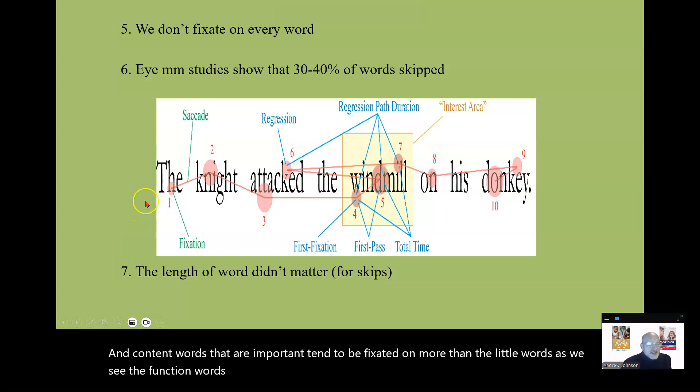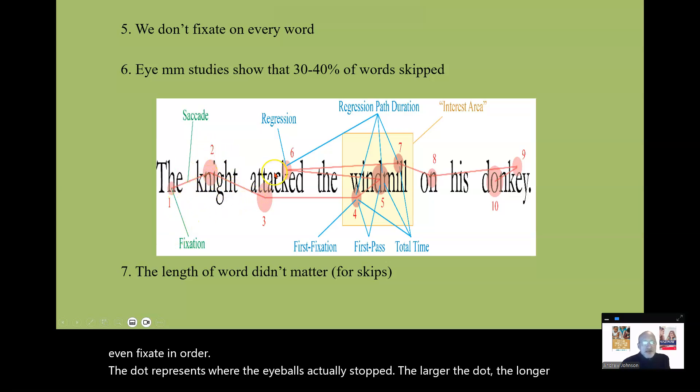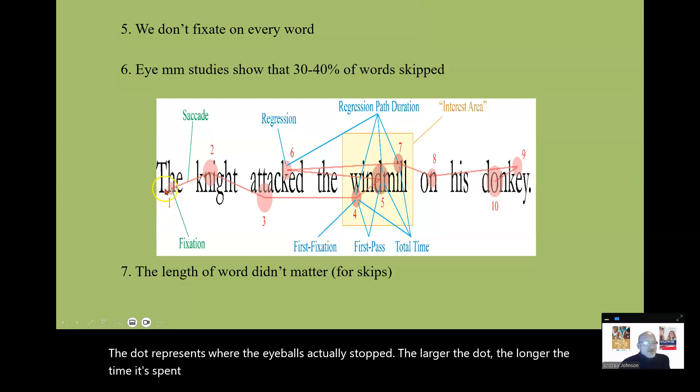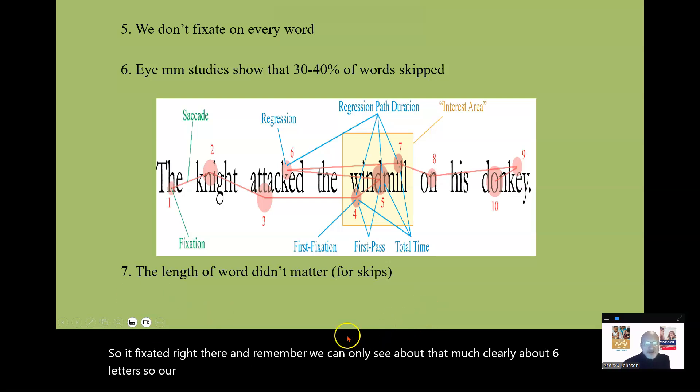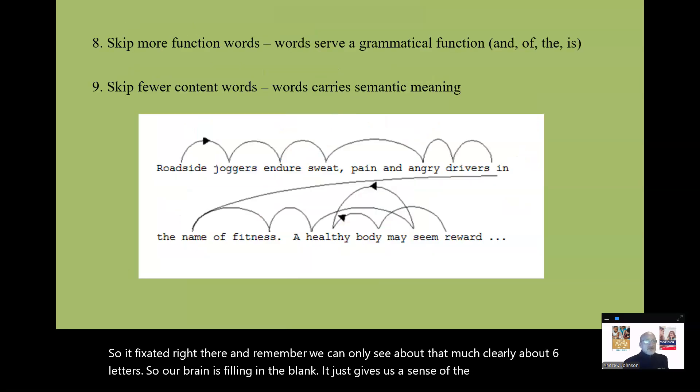And let's see the path. The path is 1, 2, 3, 4, 5, 6, 7, 8, 9, 10. Our eyes, we don't even fixate in order. The dot represents where the eyeballs actually stopped. The larger the dot, the longer the time it's spent on it. So it fixated right there, there, there. And remember, we can only see about that much clearly, about six letters. So our brain is filling in the blank. It just gives us a sense of the whole. Our brain is filling in the blanks.